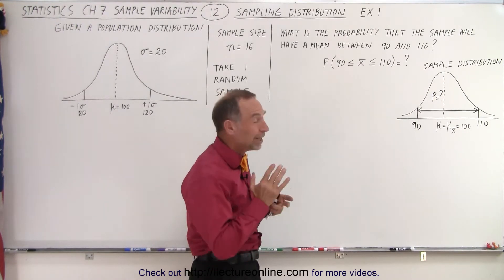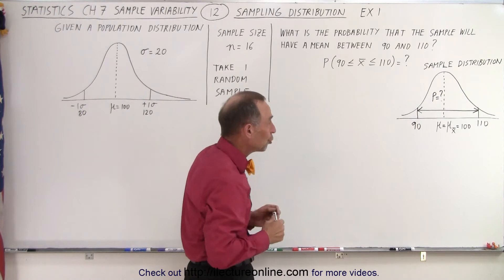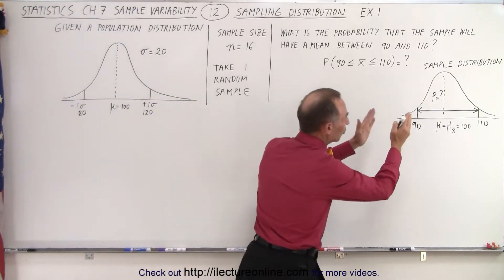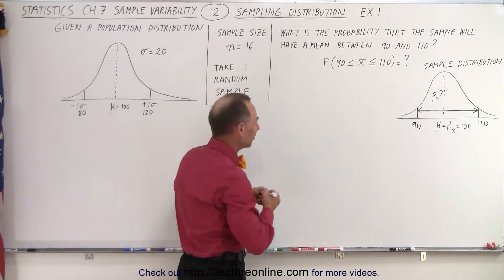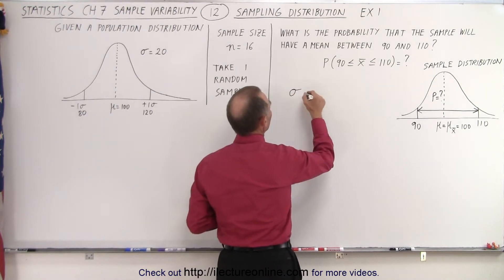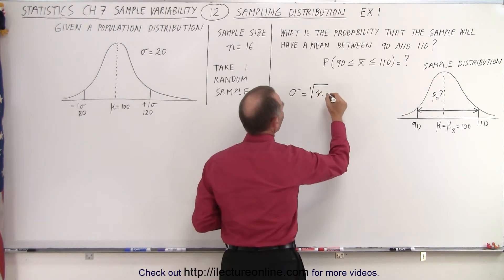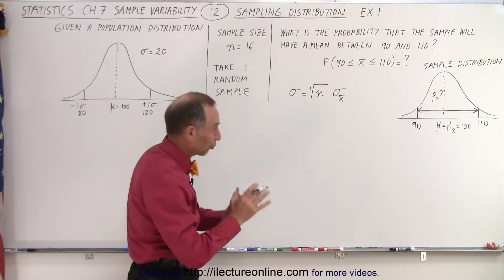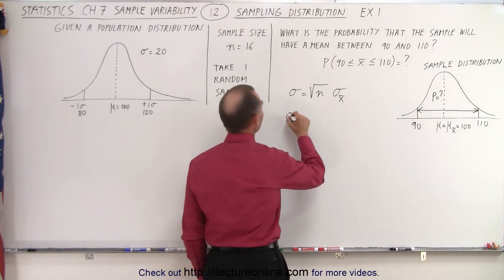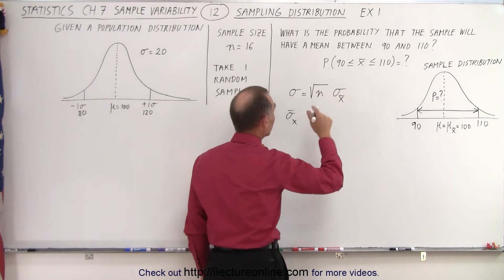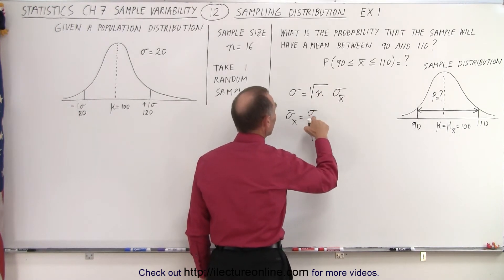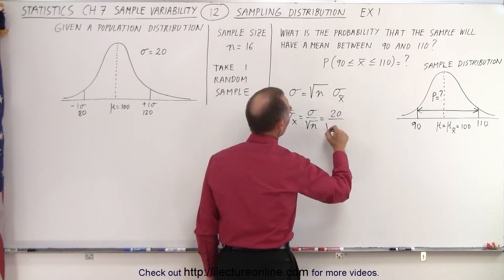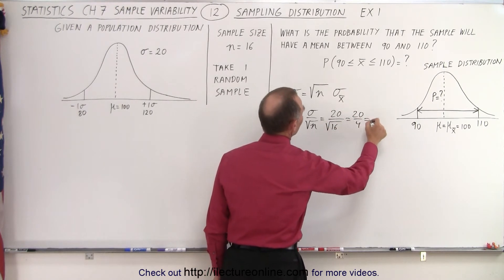We need to find the standard deviation of the sample distribution. There's a relationship: the standard deviation of the population equals the square root of the sample size times the standard deviation of the sample distribution. So the standard deviation of the sample distribution equals the standard deviation of the population divided by the square root of the sample size — in this case, 20 divided by the square root of 16.